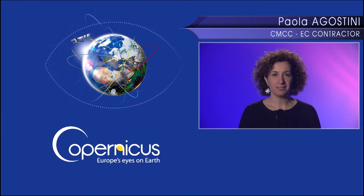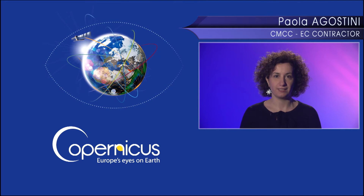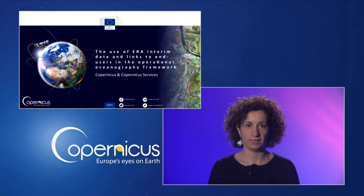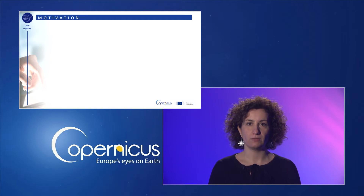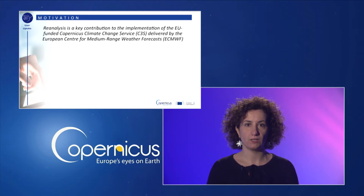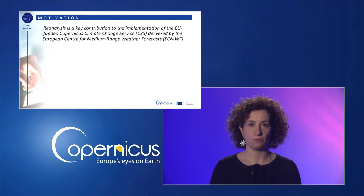This presentation is about the use of the ERA Interim data for ocean reanalysis, in order to understand the climate of regional ocean configurations and its evolution to ERA5, the fifth generation of ECMWF atmospheric reanalysis of the global climate. Reanalysis is a key contribution to the implementation of the EU Copernicus Climate Change Service, delivered by the European Centre for Medium-Range Weather Forecast, ECMWF.